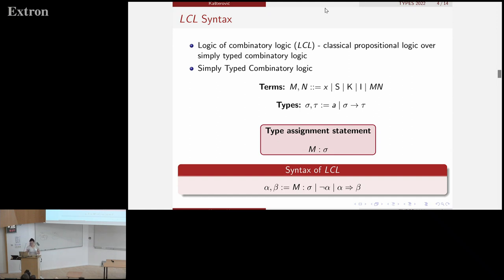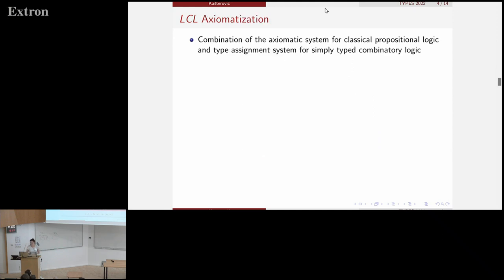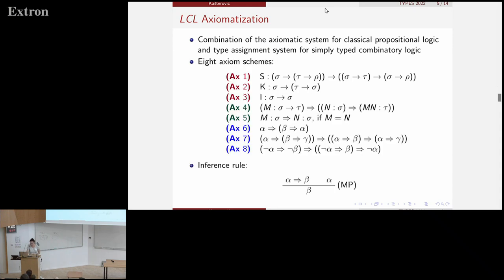And since it is obtained from these two systems, then we have defined the axiomatization of LCL also combining the axiomatization for classical propositional logic and type assignment system for simply typed combinatory logic. So we have eight axiom schemes and one inference rule. And in these axiom schemes, you can see that the first three axiom schemes deals with typing combinators SKI.